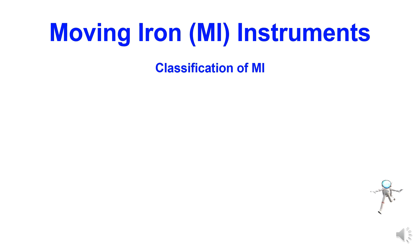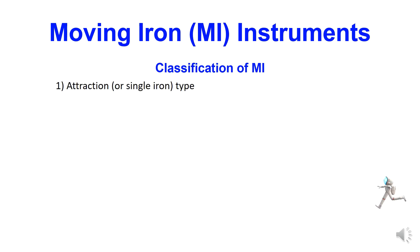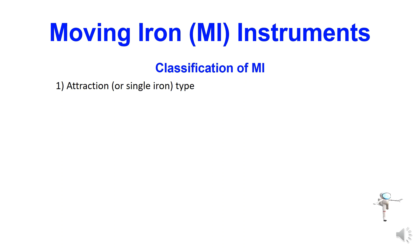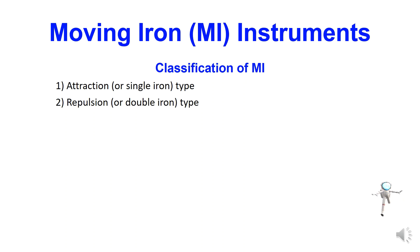Now, the classification of MI instruments. It comes in two forms: one, attraction type MI instruments, and two, repulsion type MI instruments. We will discuss them one by one.